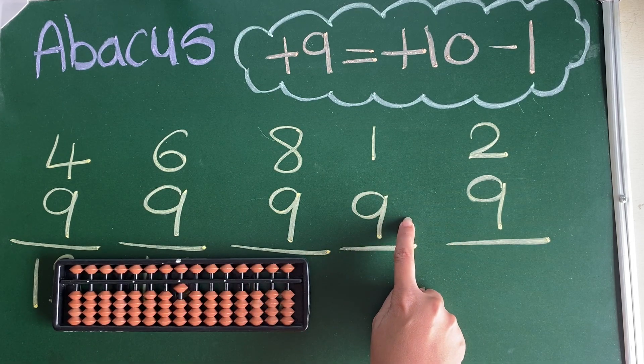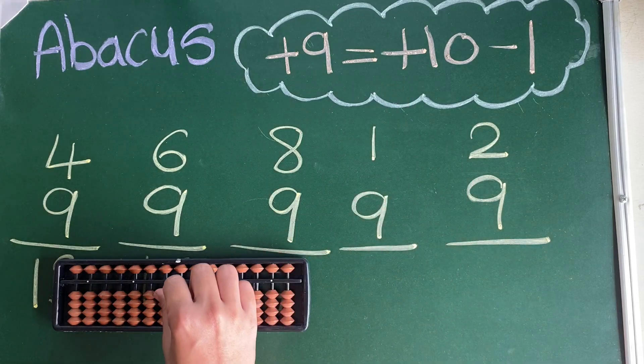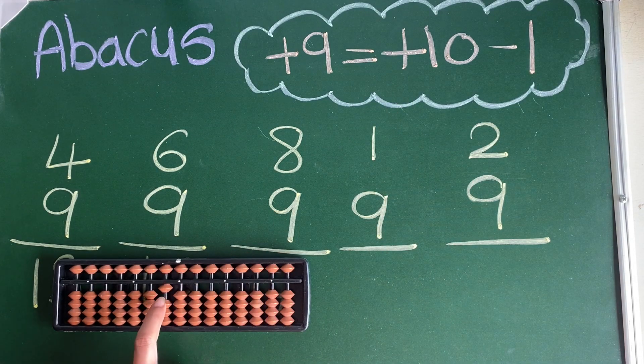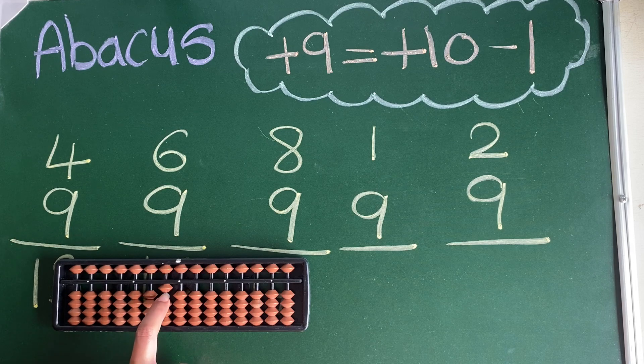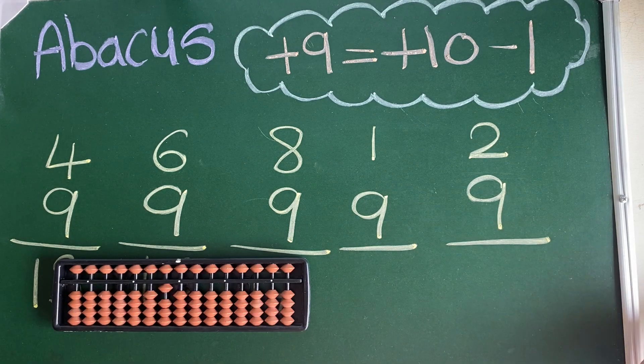1, 9. For plus 9, what are we going to do? Plus 10 minus 1. Here in tens place there is only one bit, so it is 10. 10, very good.